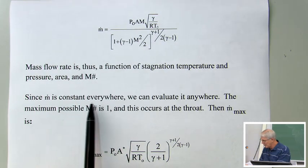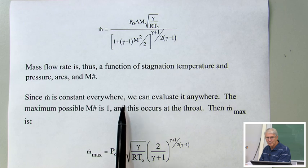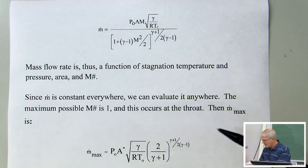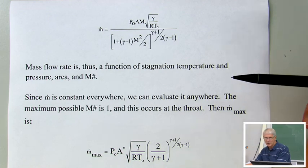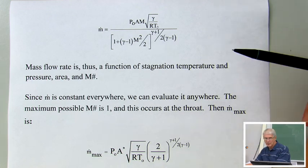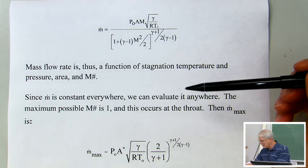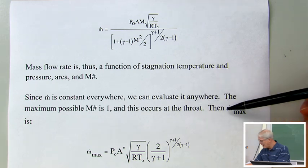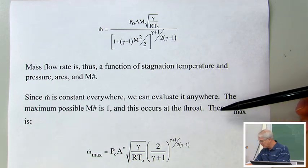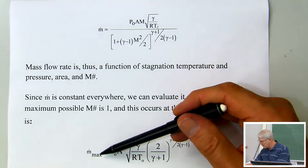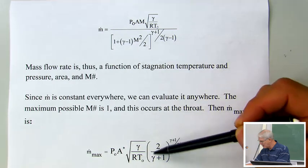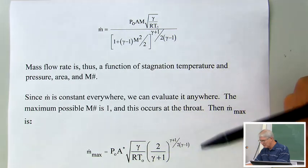Since the mass flow rate is constant everywhere under steady conditions, we can evaluate it anywhere. The maximum possible Mach number in the nozzle is 1, and this occurs at the throat. So the maximum mass flow rate we can have is found by substituting Mach number equal to 1 into our expression.